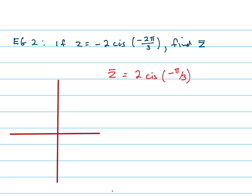What I'd suggest you do is you plot this part of the complex number, just ignoring the negative sign. So if you were to plot 2 cis negative 2 pi on 3, you would start there. You would go to there.